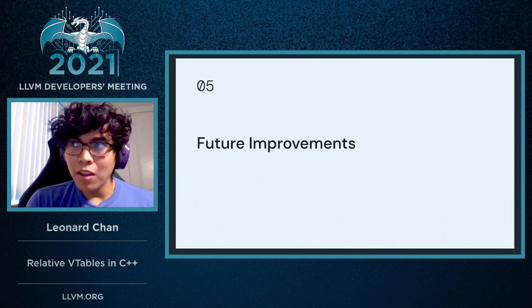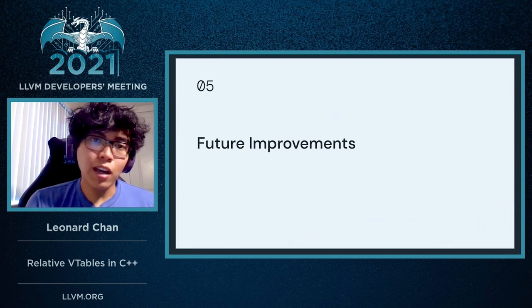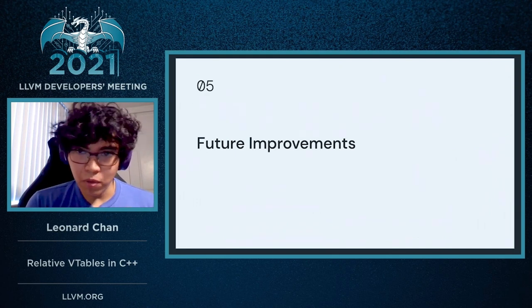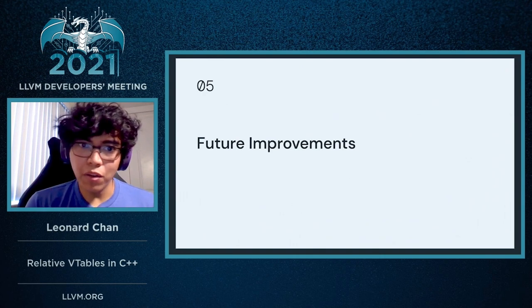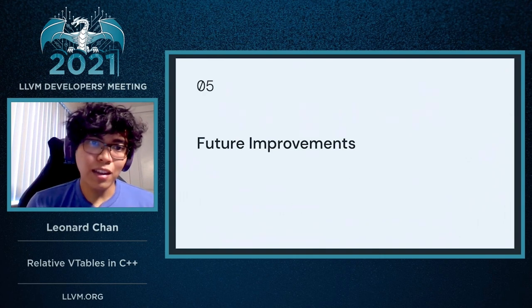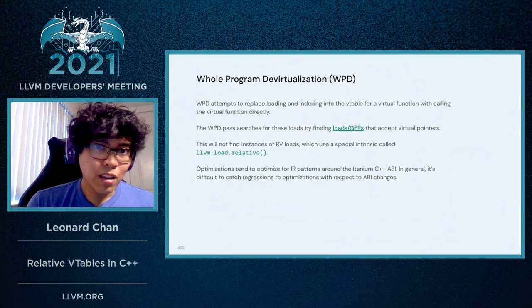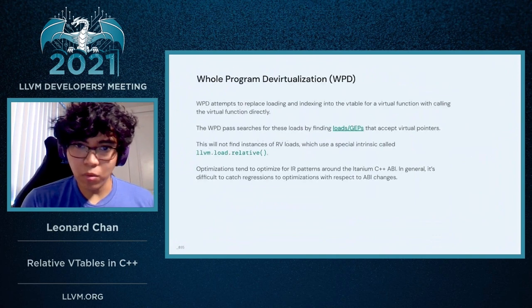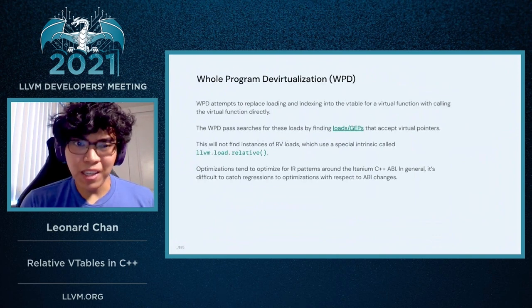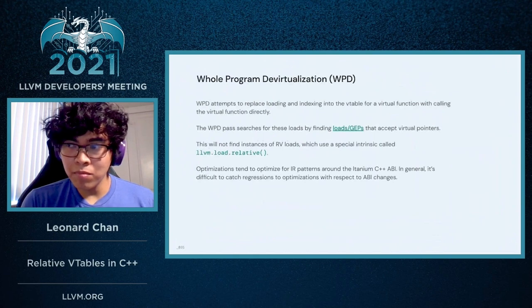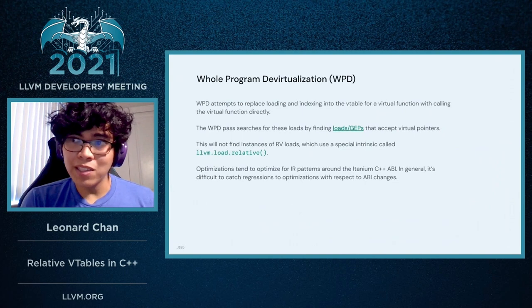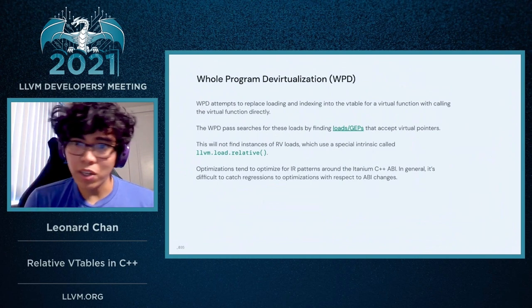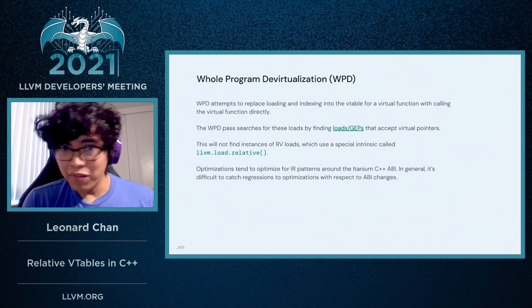So, future improvements — I'm only going to talk over these briefly, but since this talk is recorded, you can pause the video and look at the slides at your own leisure. Whole program devirtualization: right now, WPD doesn't actually work well with Relative VTables because WPD does some particular pattern matching to find interesting loads to VTables, but Relative VTables are actually loaded by a special intrinsic called llvm.load.relative, which it does not currently account for.